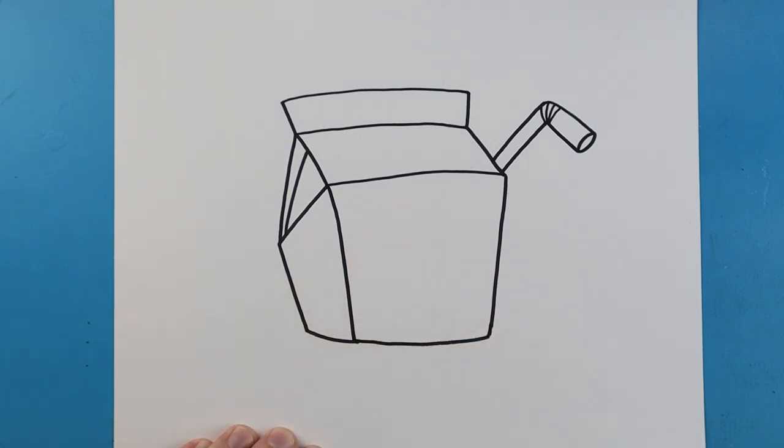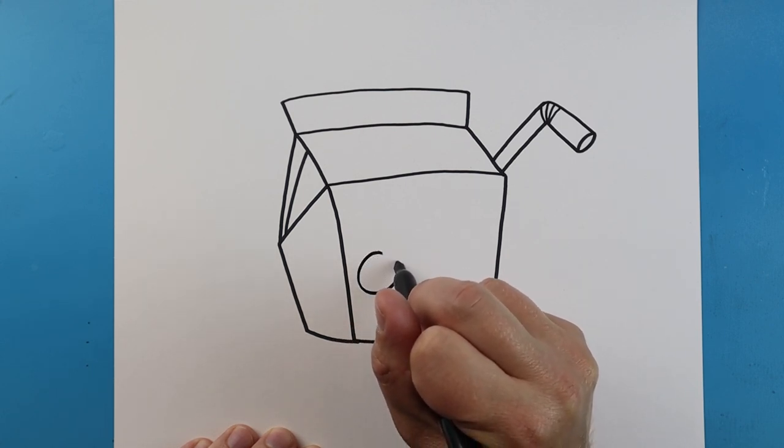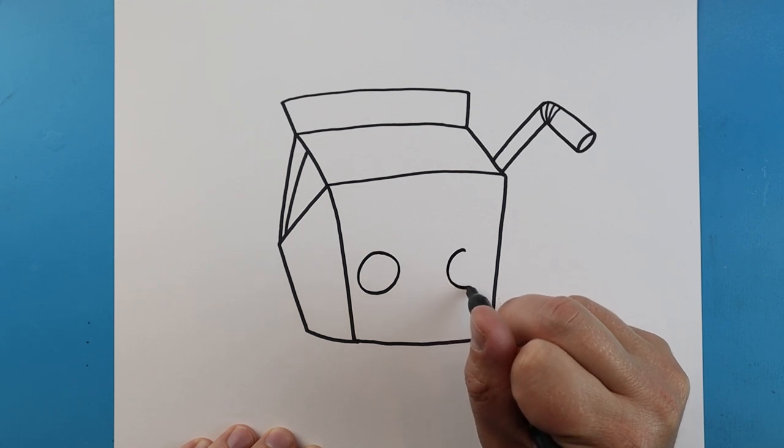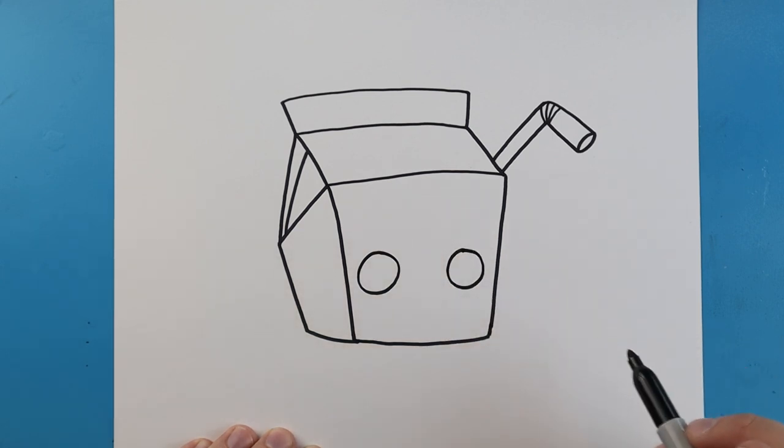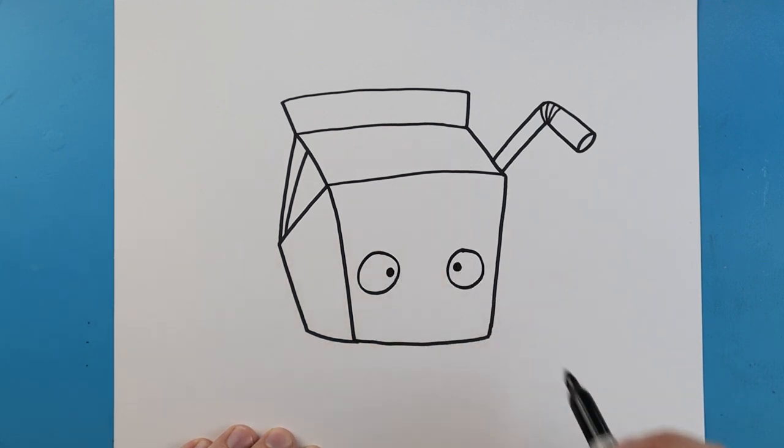Now I want to add a face. To make our face, let's start with a circle for an eye. Leave some space and make another circle for an eye over here. Color in a black dot on each side for a pupil.